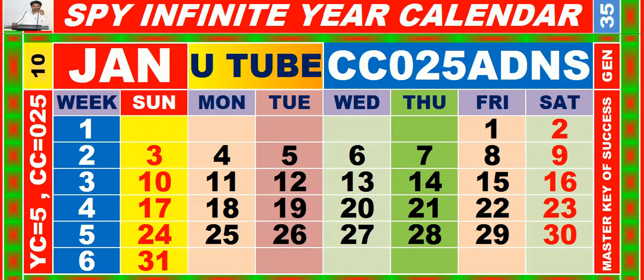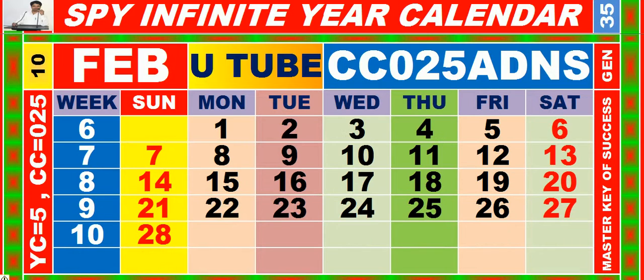Calendar for the month of January, having calendar code equal to 025. Calendar for the month of February, having calendar code equal to 025.